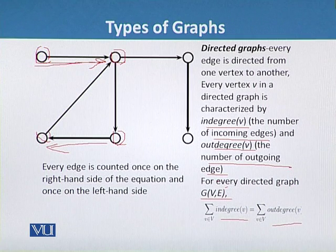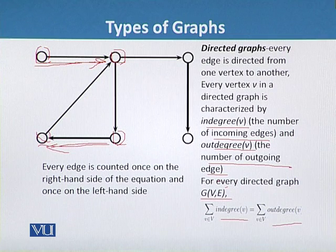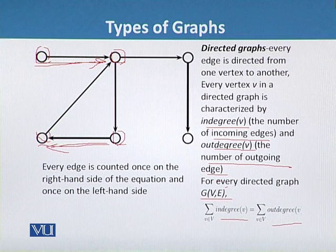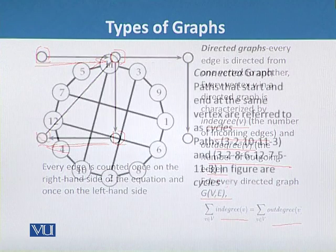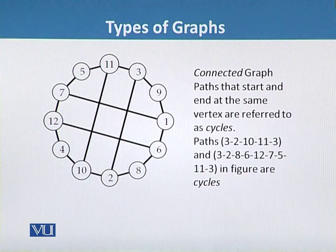In directed graphs, the number of in-degrees and the number of out-degrees are equal, since every edge is counted once on the left-hand side of the equation and once on the right-hand side of the equation.